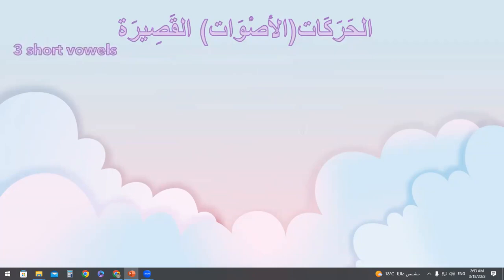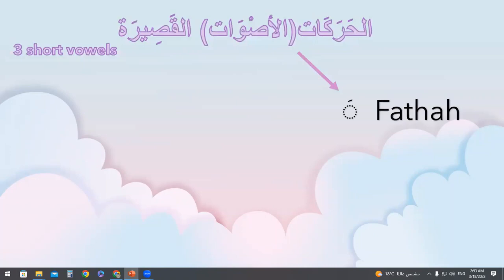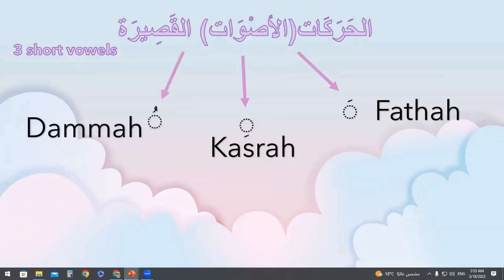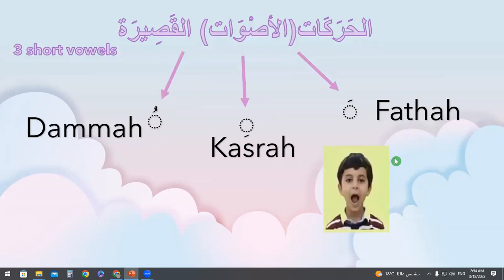We have three short vowels, each with a different sound. The first short vowel means that when you pronounce the letter, you put this sign on the top and open your mouth. For example, if we have the letter Alif, it will sound like 'a'. We will talk about it in detail after that.